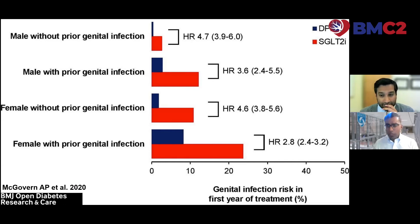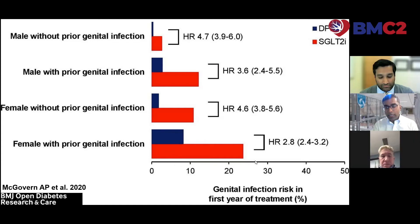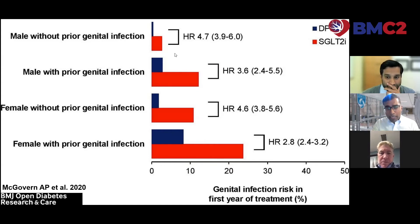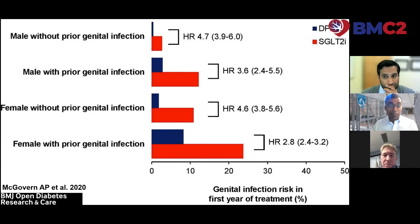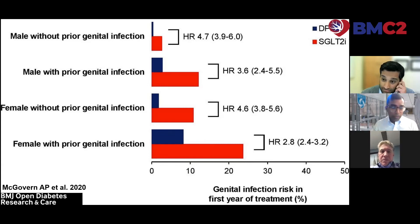The most common safety event is genital mycotic infections or yeast infections, predominantly in women with prior histories of yeast infections. Uncircumcised men are also at risk. Thankfully, these risks are not only infrequent but also relatively mild — they can be treated with a single dose of an oral therapy like fluconazole or over-the-counter topical antifungal therapies.